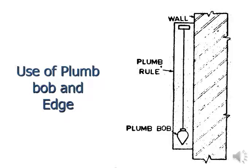For vertical alignment, a plumb line and bob are used. A straight edge — wooden or steel — is placed along the vertical alignment of the brick wall, and a plumb bob attached to it ensures the verticality of the brick wall.